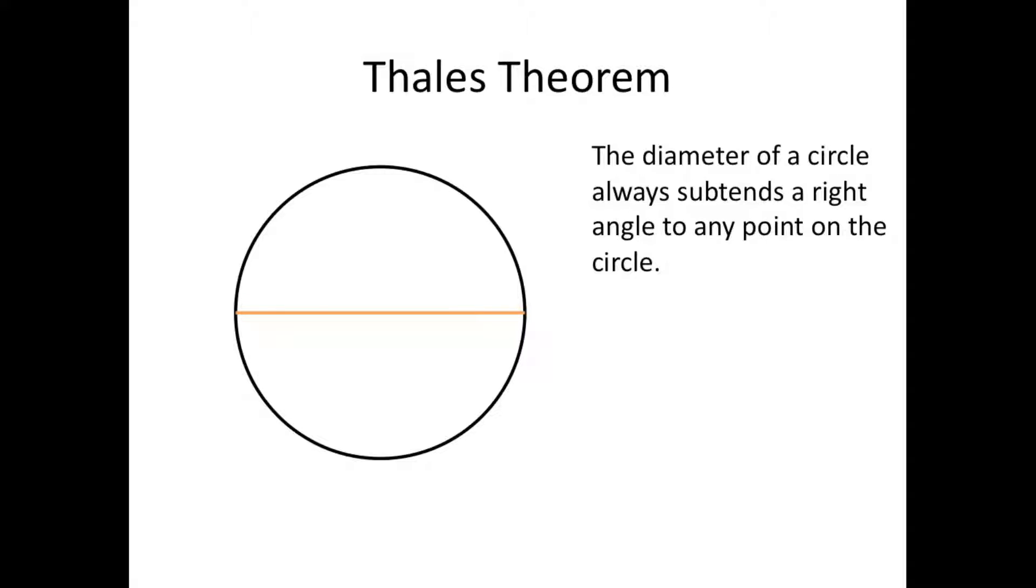Now what it means by an angle subtends is that if you pick any random point on the circumference of the circle, let's say this one or this one, as you can see we pick four random points and we're going to draw an angle using the two end points of diameter and connecting with the four points that we have. So here is one of our first angles, and then here's another one, and then another one, and another one.